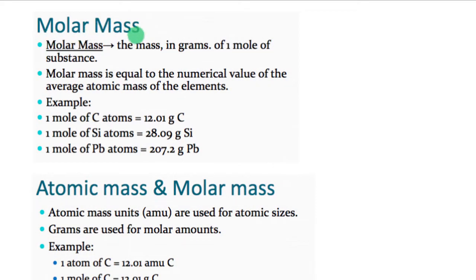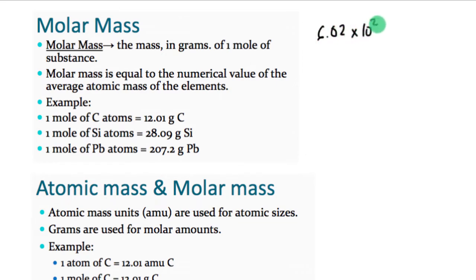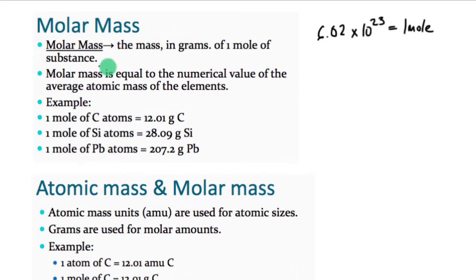Today's lesson is on molar mass. This is very similar and connected to the concept of the mole, so we're going to build off of that idea from the last video lesson. A mole is equal to Avogadro's number, which is 6.02 times 10 to the 23rd. If we count out that many particles and put them on a balance and measure the mass, that's what we're talking about with molar mass — it's the mass in grams of one mole of substance.